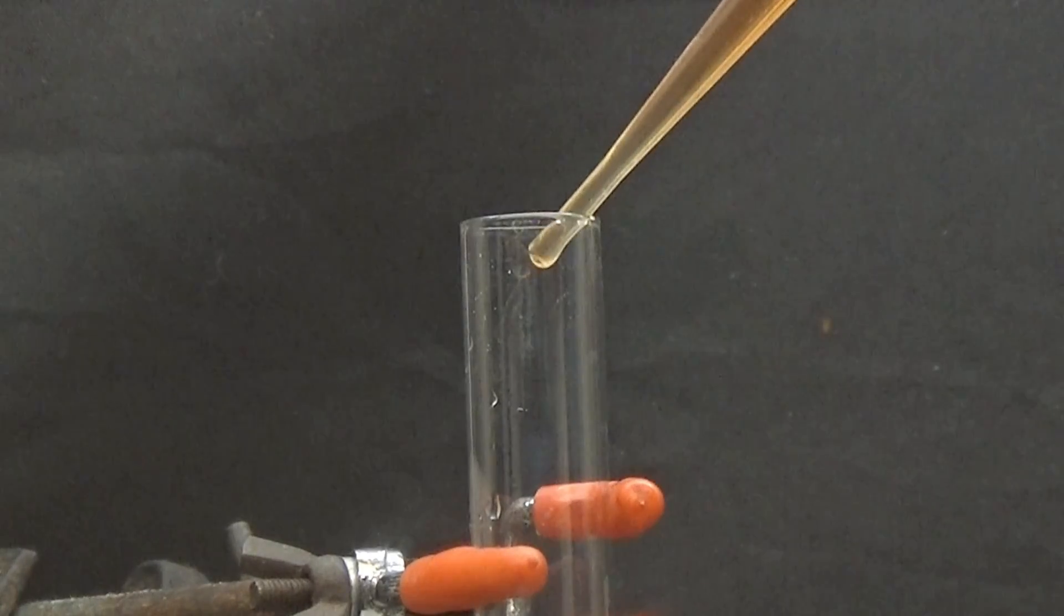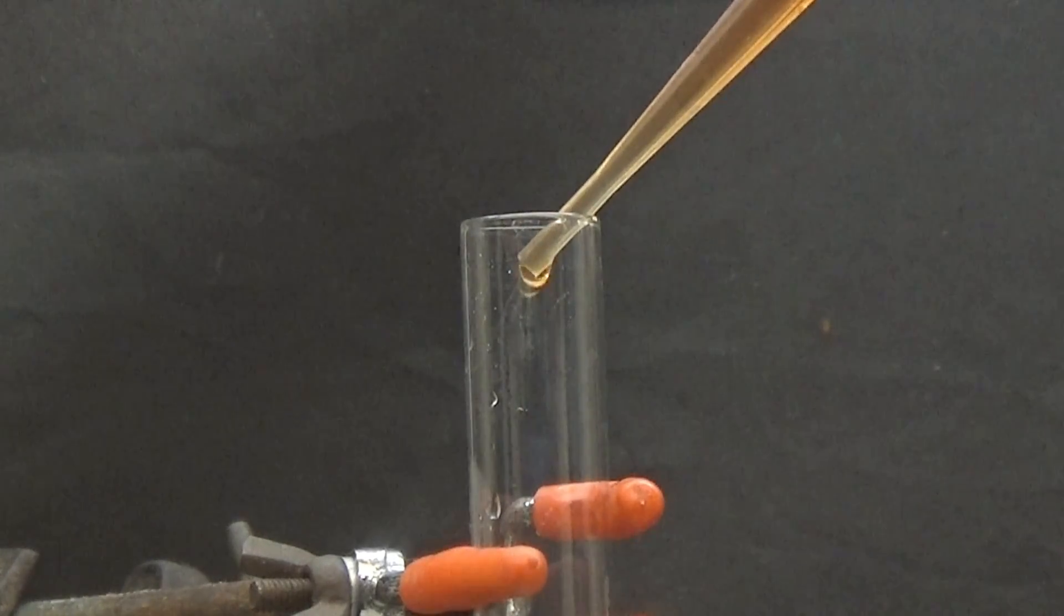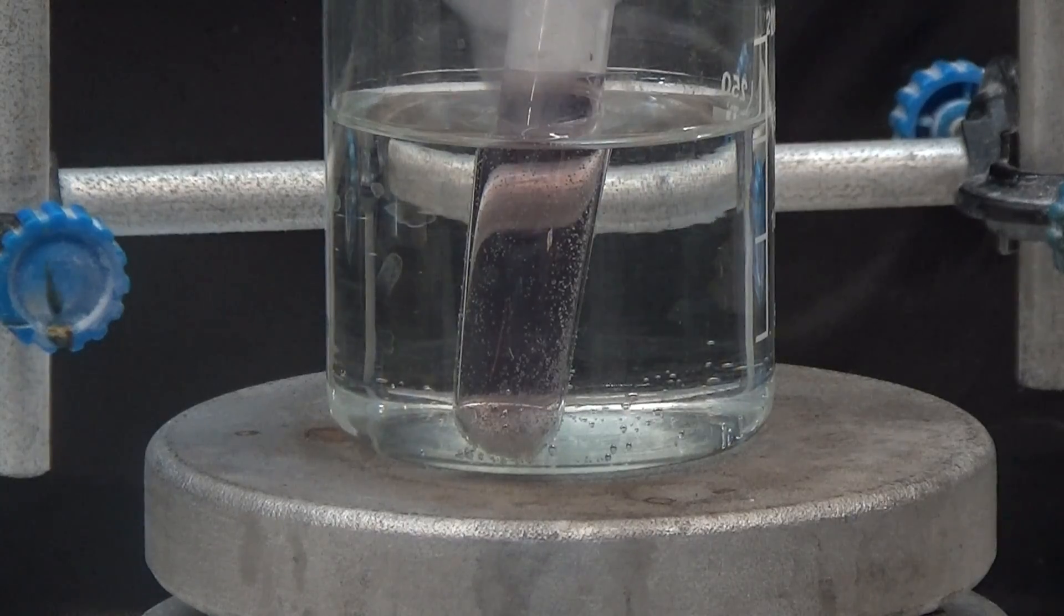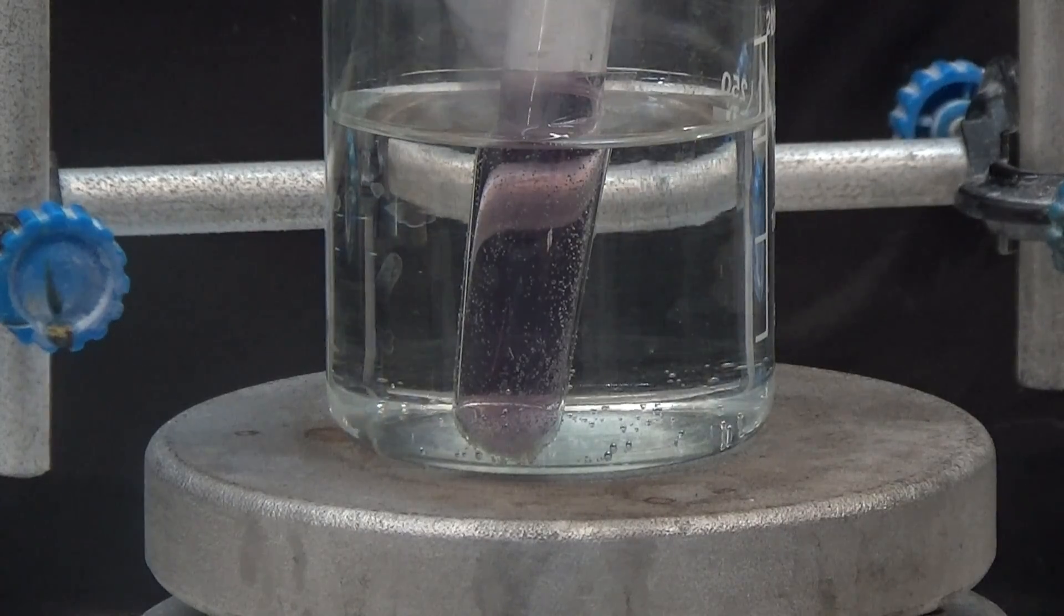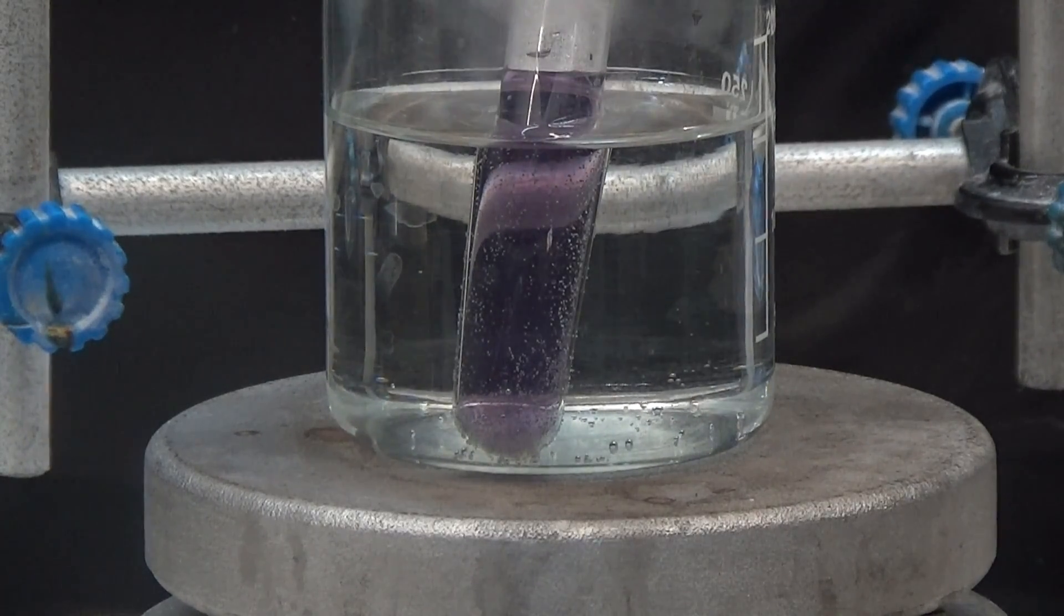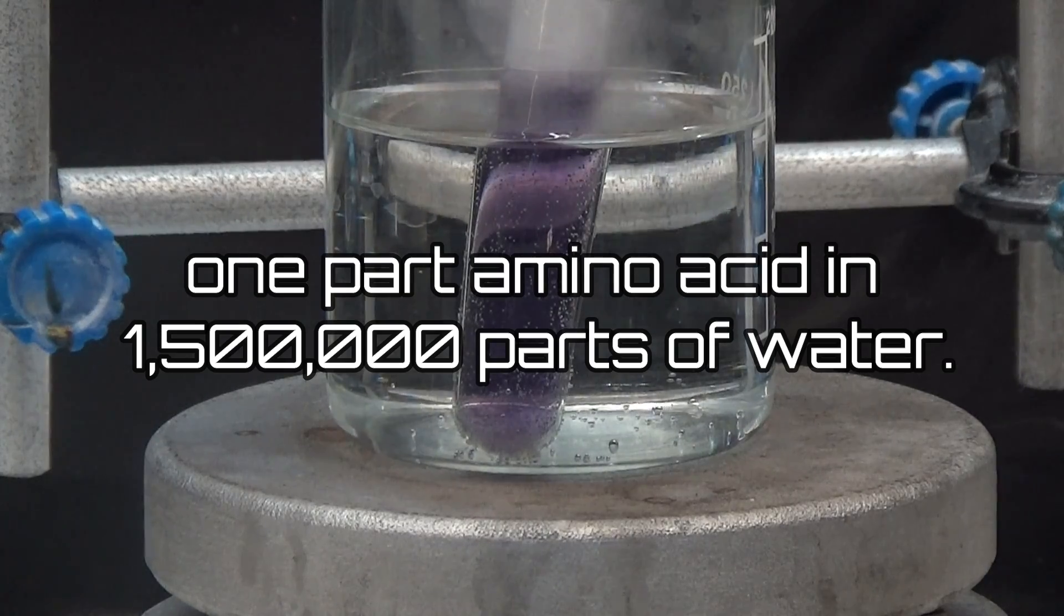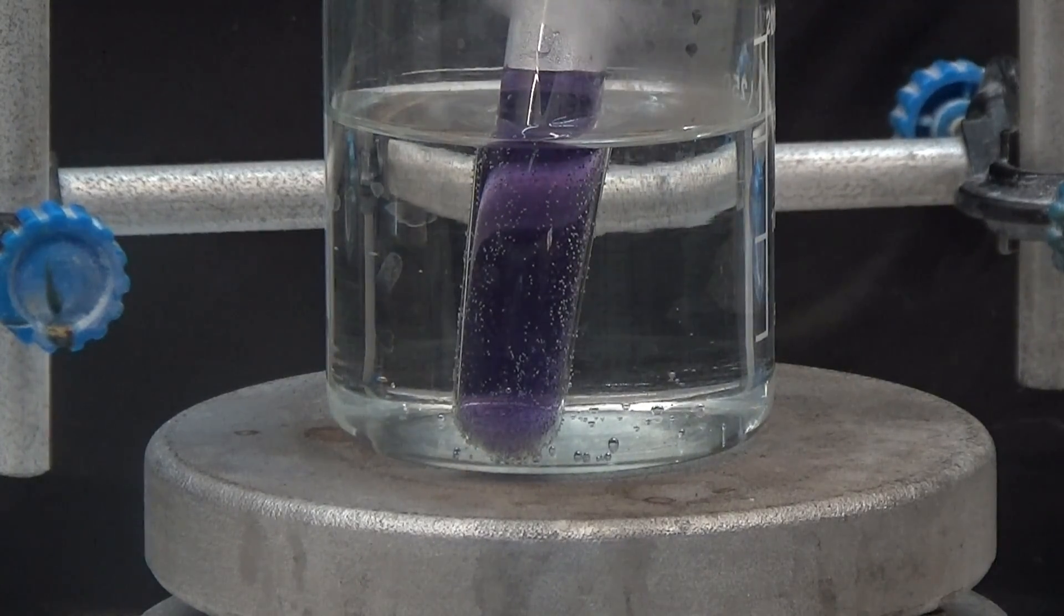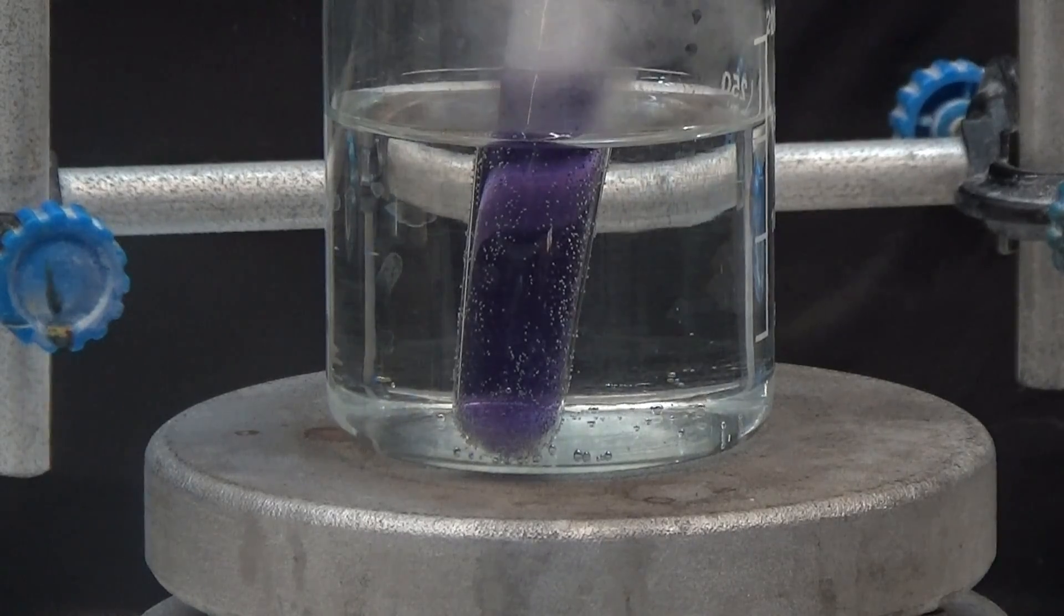We add about 6 drops of 2% ninhydrin solution and heat it in a water bath for 5 or 10 minutes. If the result is positive, the solution changes color to a deep blue or violet. This test is very sensitive, detecting one part of an amino acid in 1,500,000 parts of water. In instances where the biuret test is inconclusive, the ninhydrin test is positive.